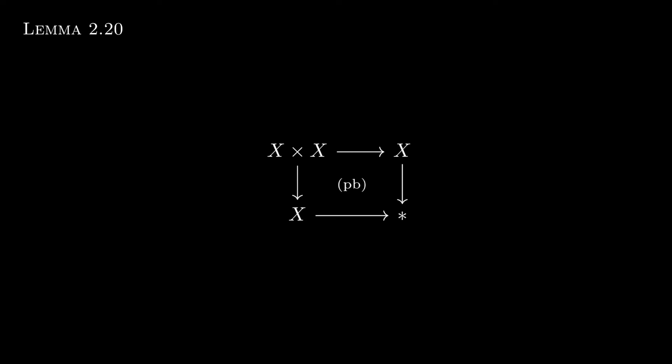Well then, each component map is a map from the path space object to x cross x to x, hence the composite of a fibration, which is by definition, followed by another fibration, which we just showed. Hence it is itself a fibration, and we're done.